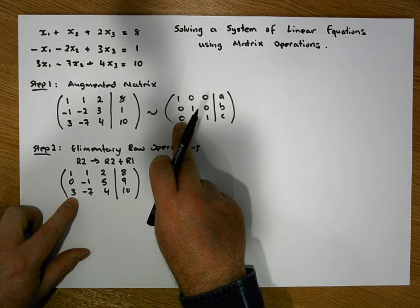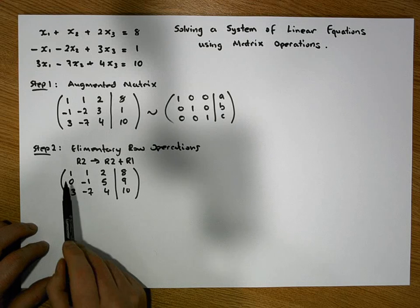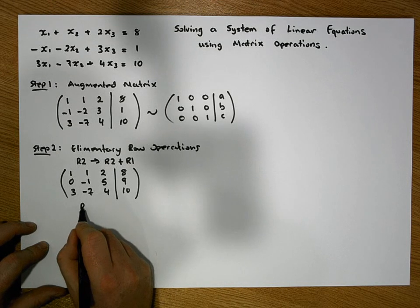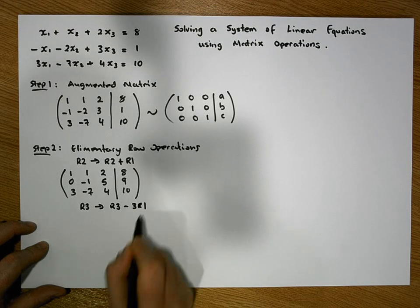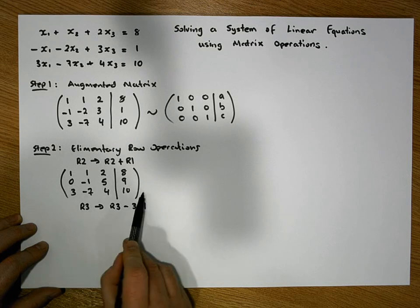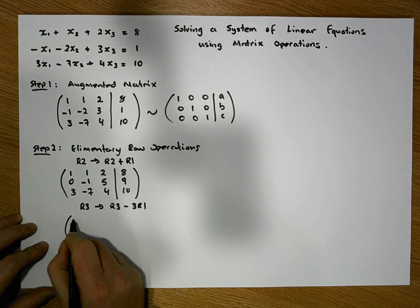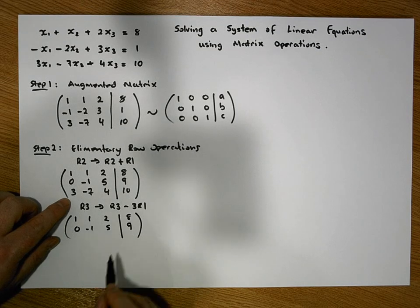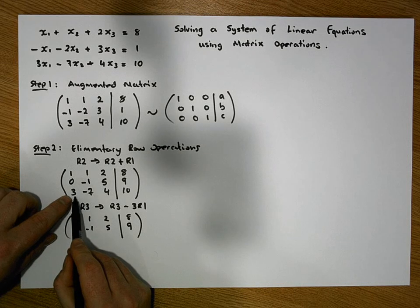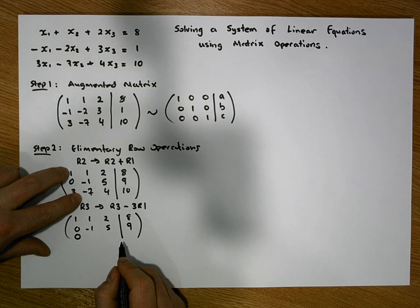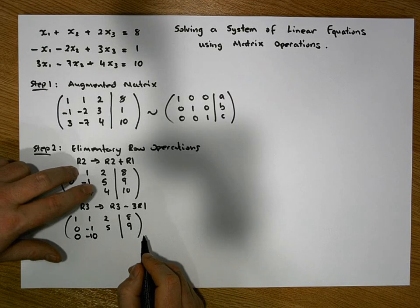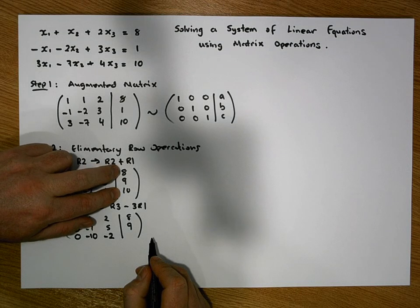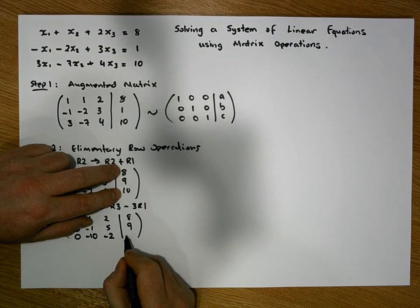Next we need to change the 3 in row 3 to a zero. The operation row 3 becomes row 3 minus 3 times row 1 achieves this. Rows 1 and 2 remain the same. Row 3 becomes: 3-3×1=0, -7-3×1=-10, 4-3×2=-2, and 10-3×8=10-24=-14. So row 3 is now 0, -10, -2, -14.